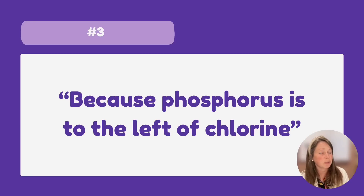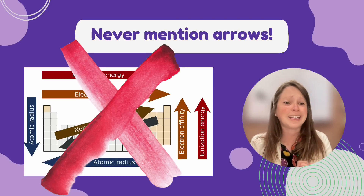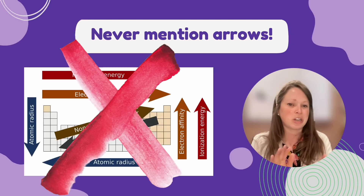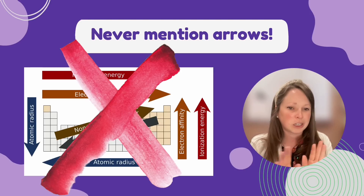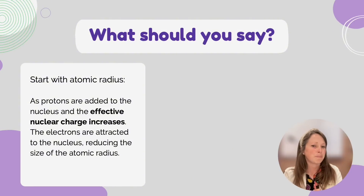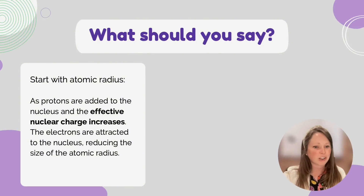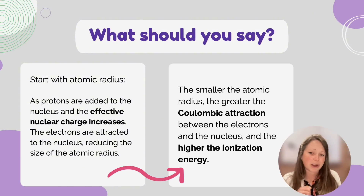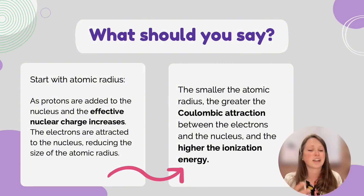Don't say things like 'phosphorus has a larger atomic radius because it's to the left of chlorine' and reference directional arrows associated with periodic trends. Those arrows are a great tool to help you remember the trends, but you should be describing the trend itself — and don't mention arrows for equilibrium forward versus reverse reactions either. Instead, explain that as protons are added to the nucleus moving across a period, the effective nuclear charge increases, the magnitude of positive charge in the nucleus increases, electrons are more attracted to the nucleus, and therefore the atomic radius decreases. All other trends tie back to this: the smaller the radius, the greater the Coulombic attraction, and therefore the higher the ionization energy.